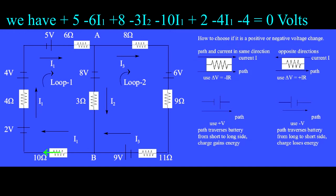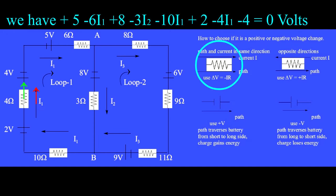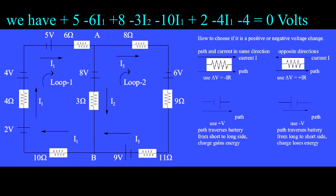The path next moves through the 10 ohm resistor, in the same direction as the current I1, so we choose minus IR, or minus 10I1, as the voltage change in this circuit element. The path next goes the wrong way, from long to short sides of the 4 volt battery, so we write minus 4V. We are then back to the beginning point, and the sum of our energy gains and losses must be zero. We have now written the conservation of energy for loop number 1.